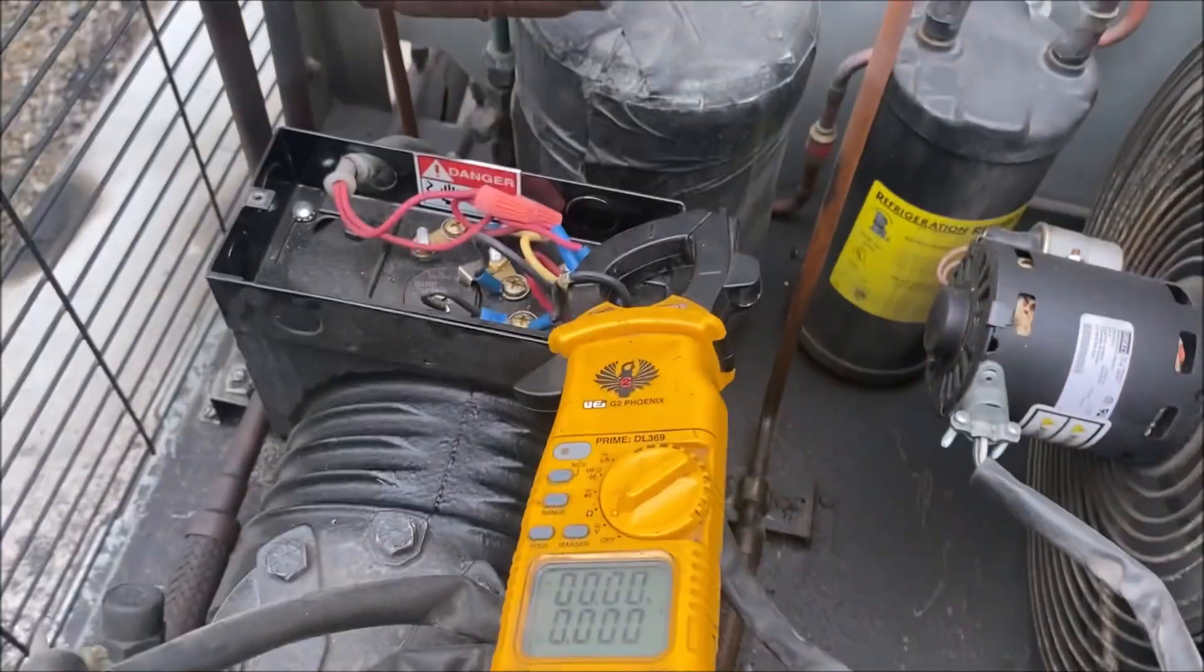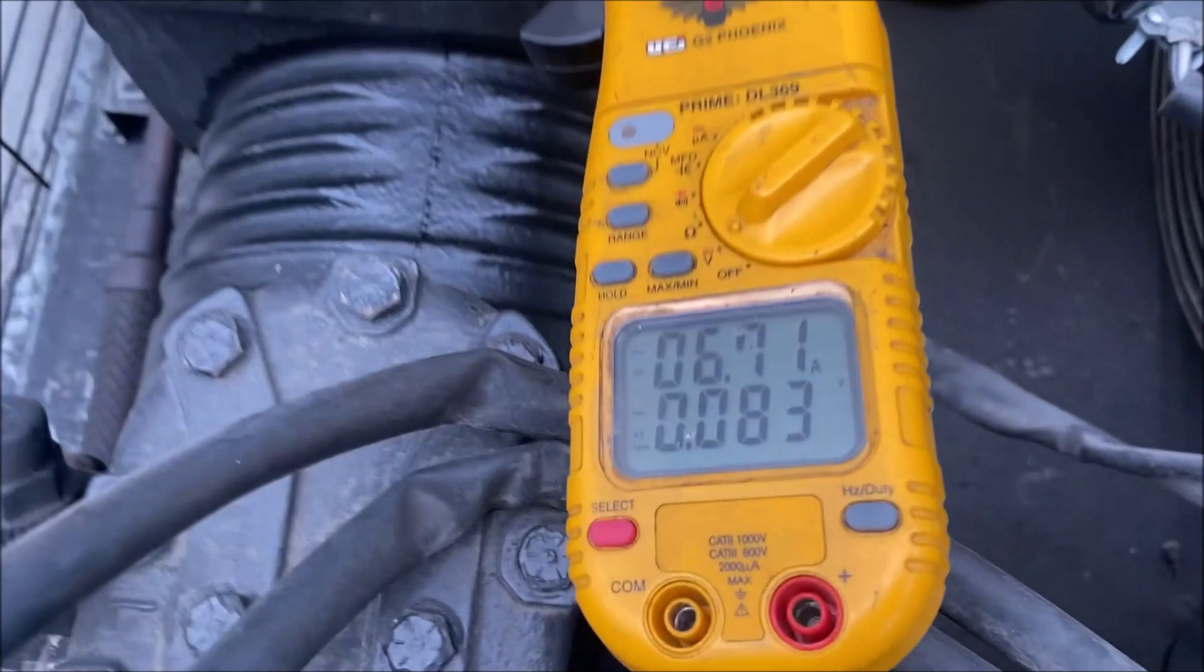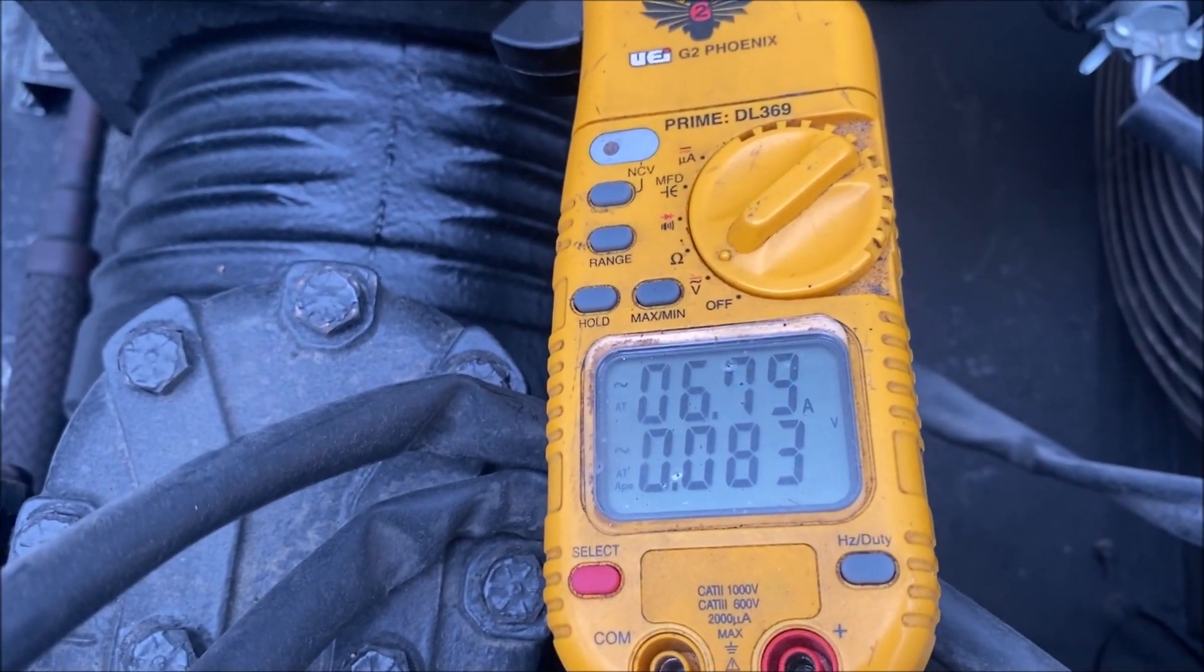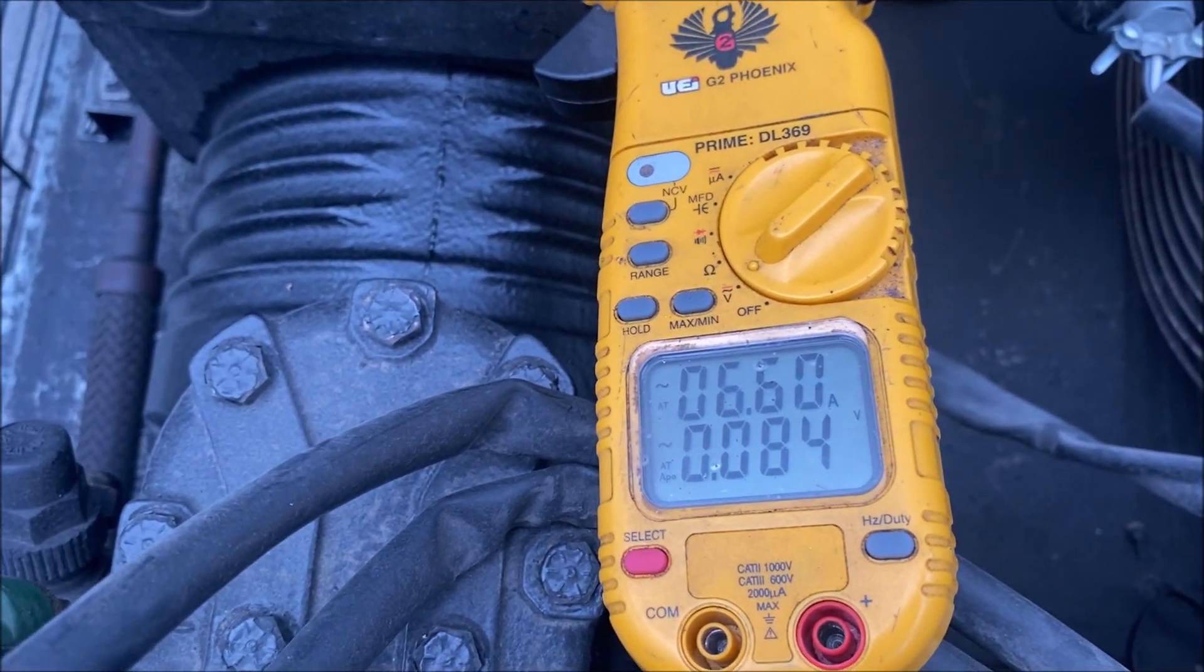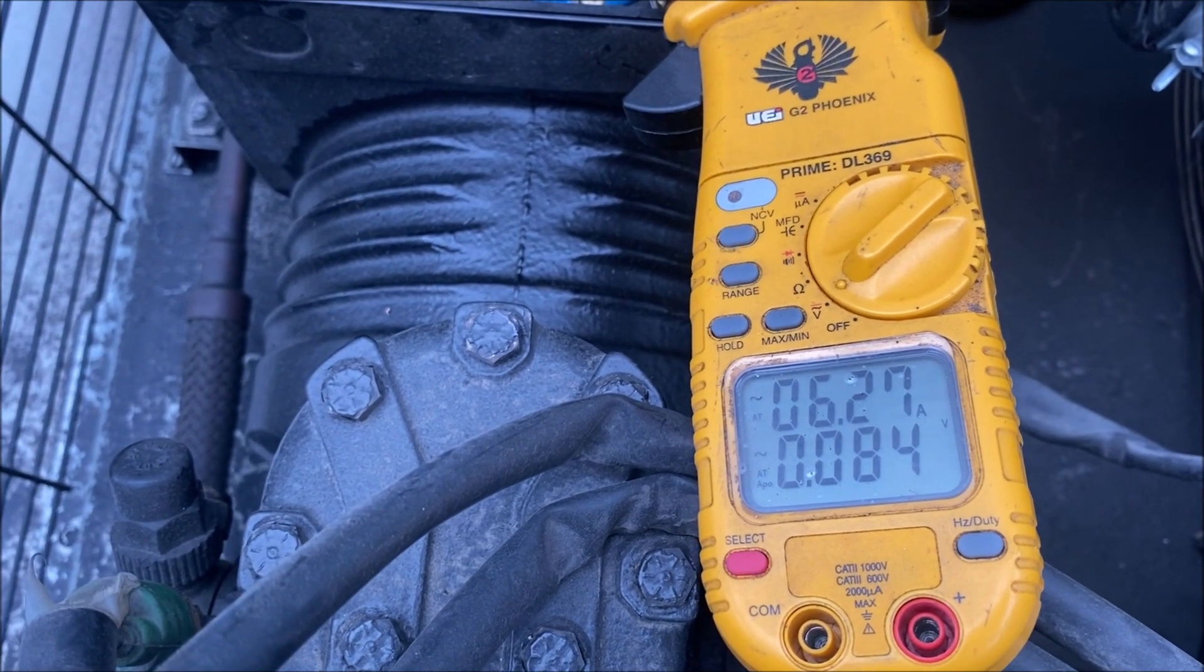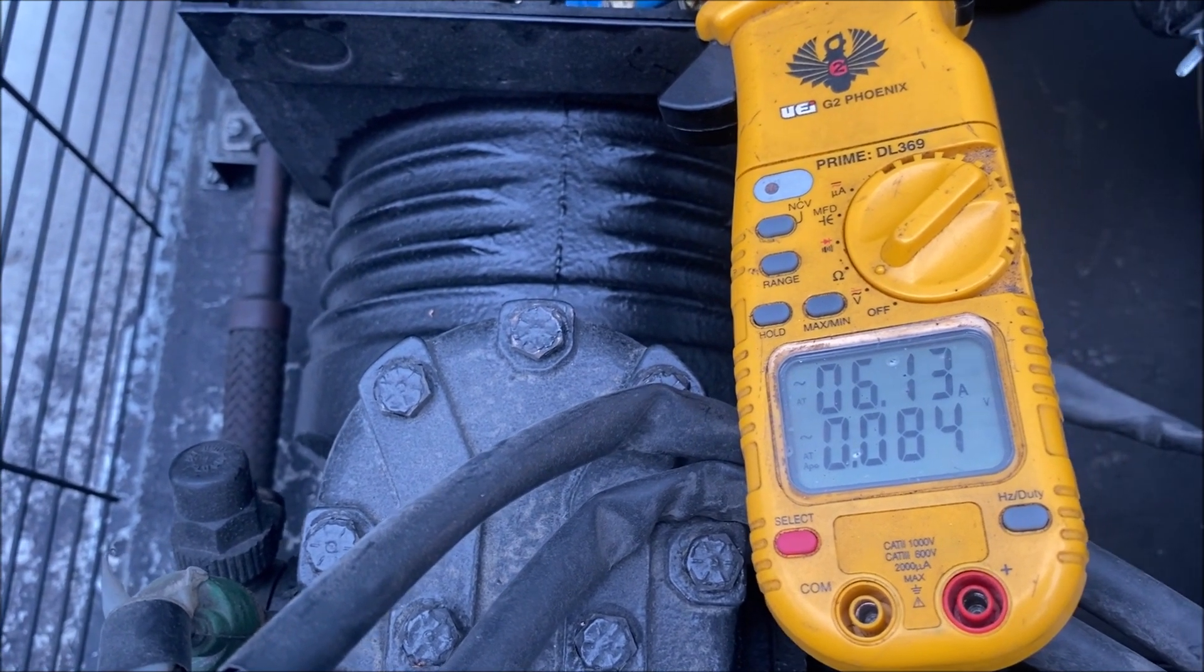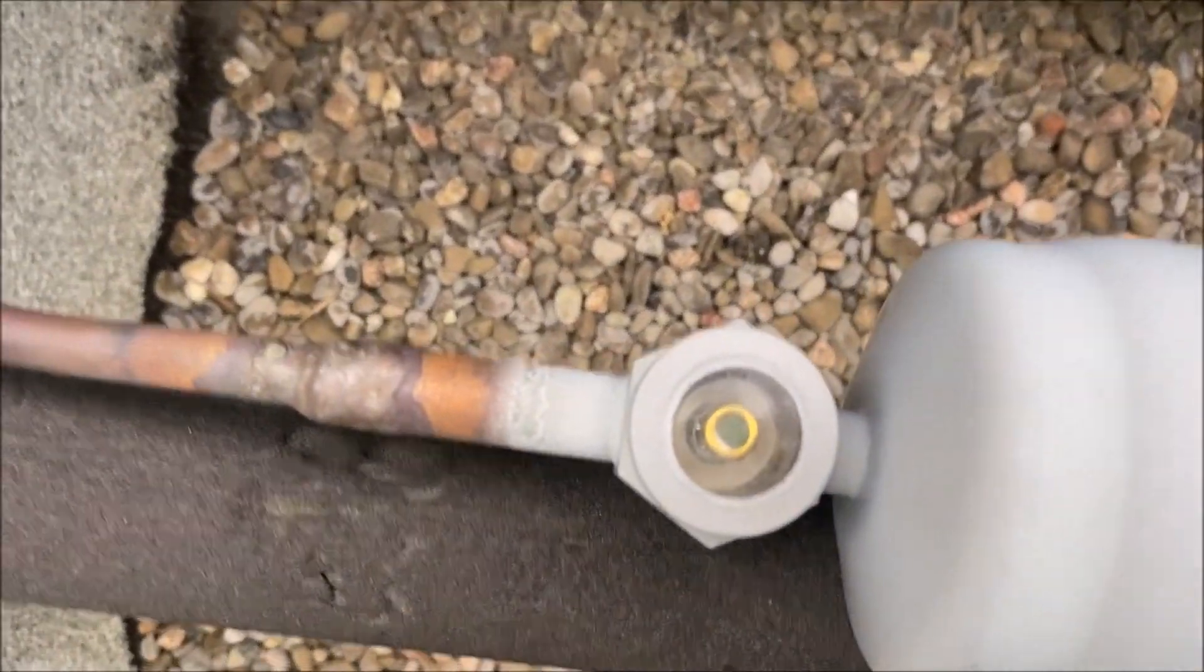All right, so changed all these start components here. Let's fire up, see what happens. And we're getting 6.8 amps. That's really good. Compressor's running, we don't need a new compressor, which is kind of a relief right now because we're so busy at work. So I was thankful for that.